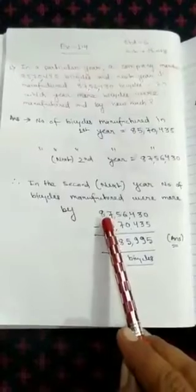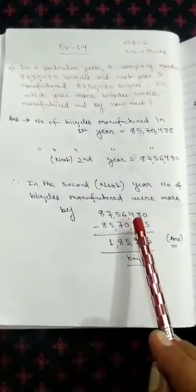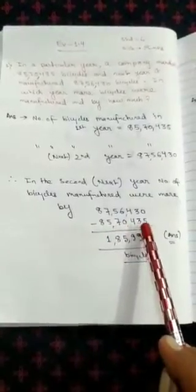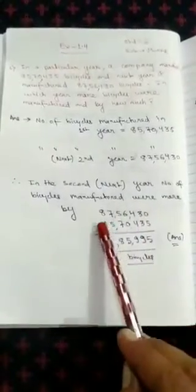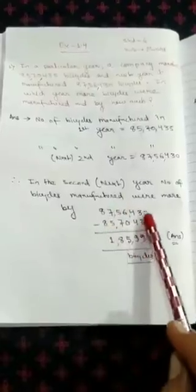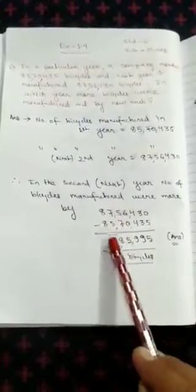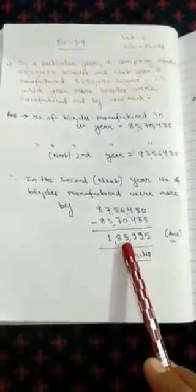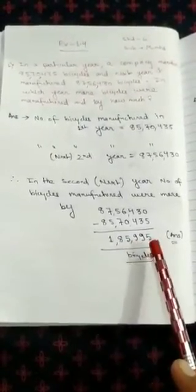By 87,56,430 minus 85,70,435. Now you have to subtract to see how many more bicycles were manufactured in the next year. Now you just subtract these two. You will get 1,85,995 bicycles.